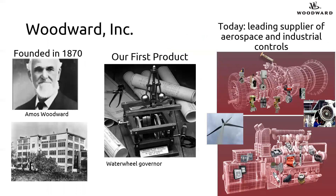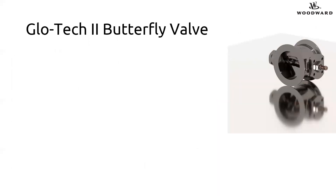Woodward Incorporated was founded in 1870. We're celebrating our 150th anniversary this summer, which is exciting. Our first product was a water wheel governor, a model of which is shown in the middle of the slide. But today we've grown into an international company and are a leading supplier of various aerospace and industrial control products.